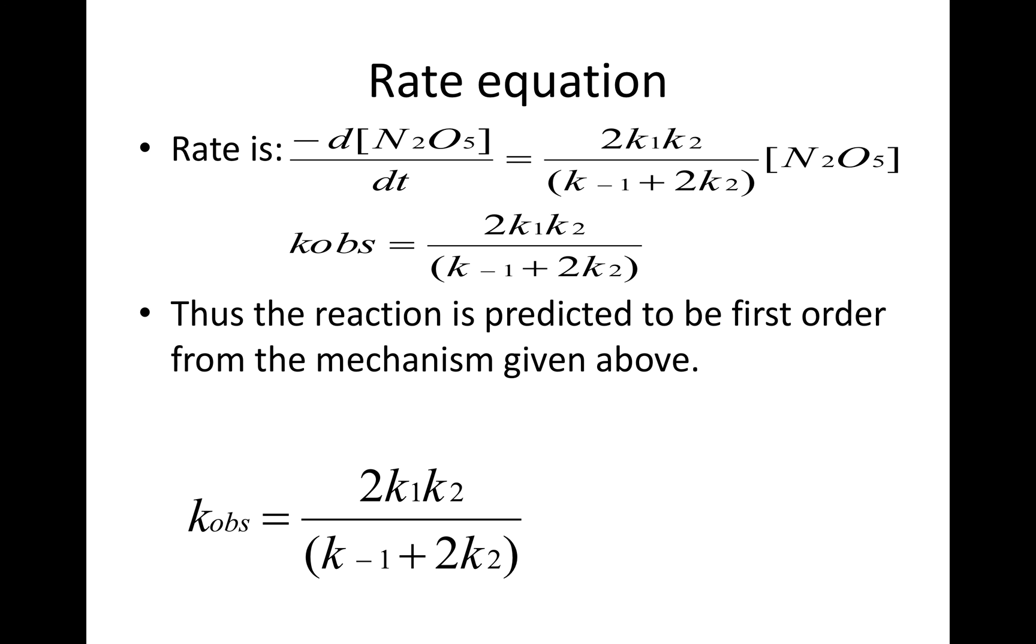Now here the experimentally observed k then will contain 2k₁k₂/(k₋₁ + 2k₂). So according to this the reaction is...